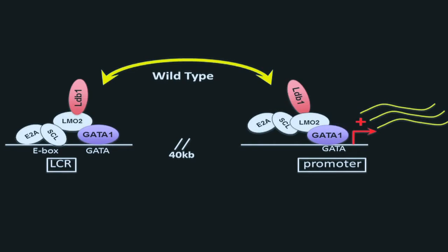A factor called LDB1 was a strong candidate, in part because LDB1 was known to play a role in LCR beta-globin looping. In addition, LDB1's Drosophila homolog is required for long-range enhancer-promoter communication. LDB1 is a non-DNA binding protein that is recruited to chromatin by DNA binding factors, including GATA1.